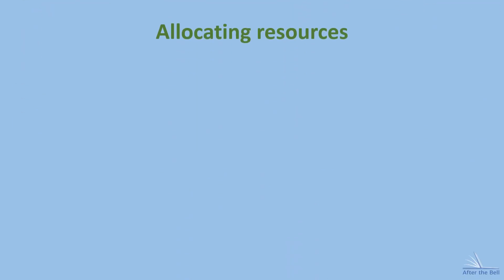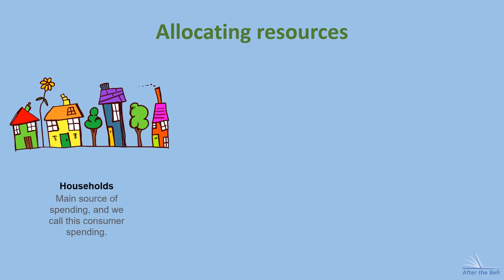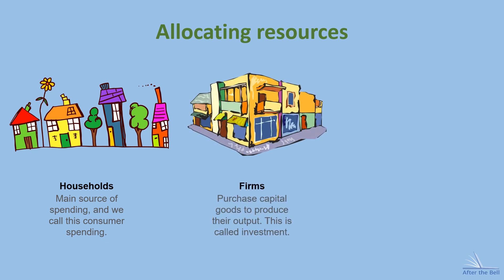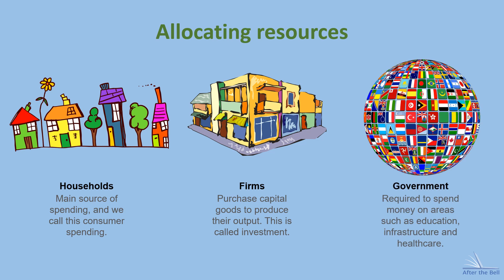When we're allocating resources, there are three groups involved in this process. Households are the main source of spending — we call this consumer spending. Every time we buy something from the supermarket or choose which games console to buy, we're motivated by a desire to maximise our utility, which basically means satisfaction gained from consuming a good. Firms also spend money purchasing capital goods to help them produce their output — that's called investment — and their objective is usually to maximise their profits. The government is also required to spend money on areas like education, infrastructure, and healthcare, and will have a huge range of objectives including growth, reducing inequality, and tackling poverty.